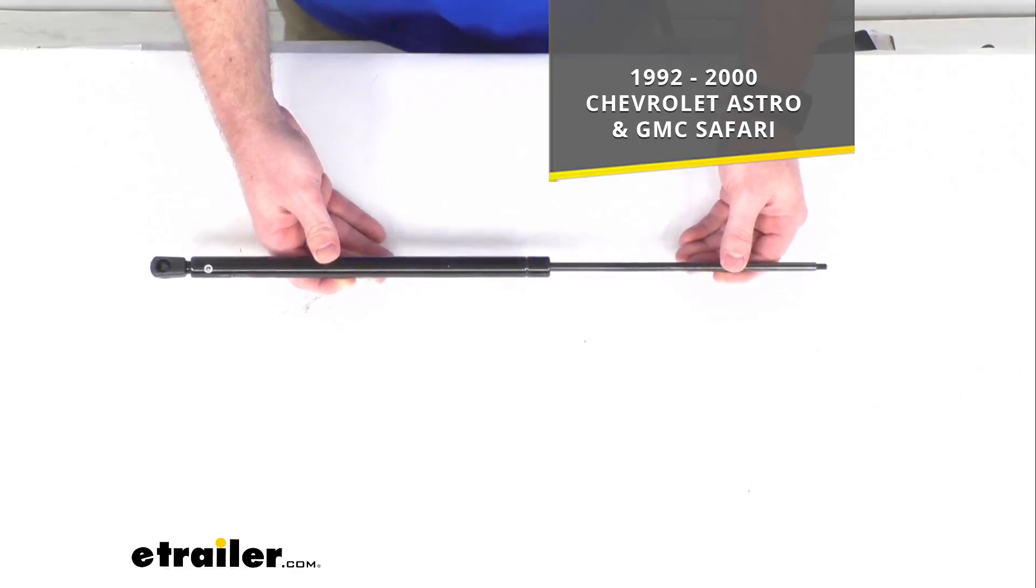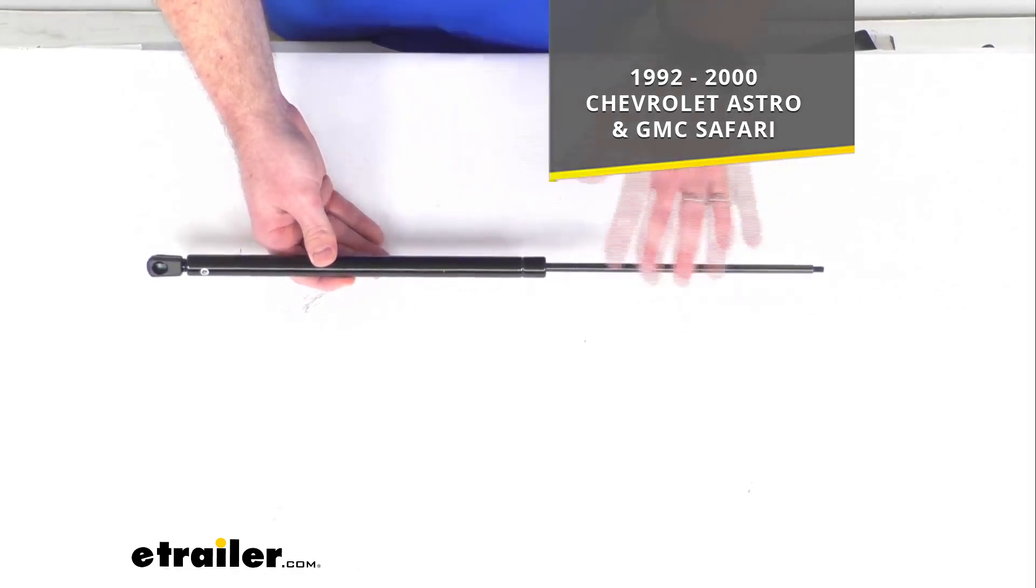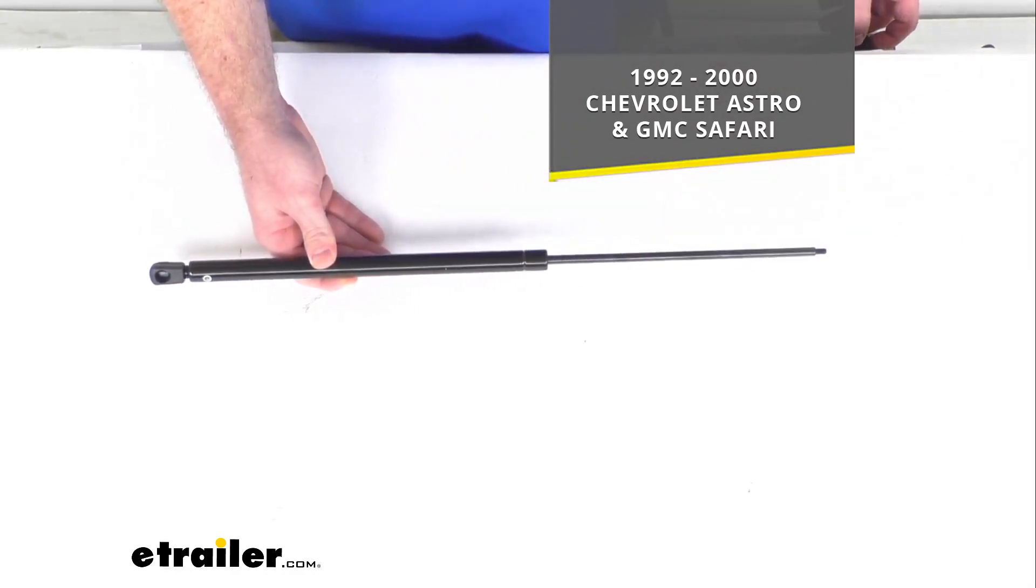It is going to work for your 1992 through 2000 Chevrolet Astro and GMC Safari. So if you have either one of those, this is going to fit right in place of that original.